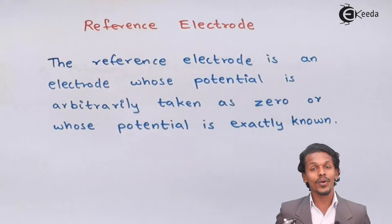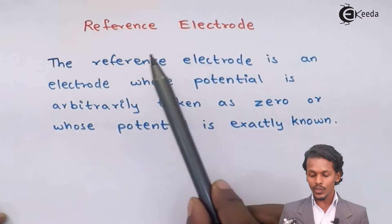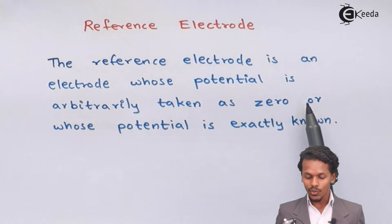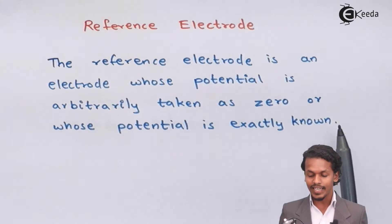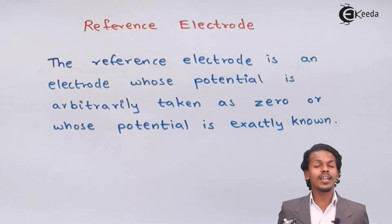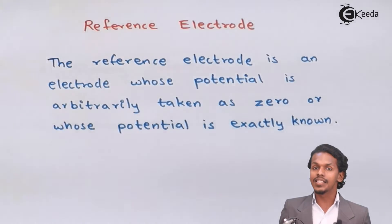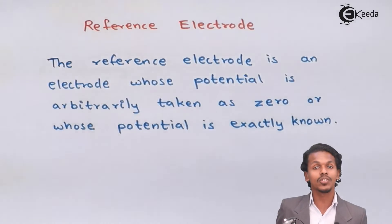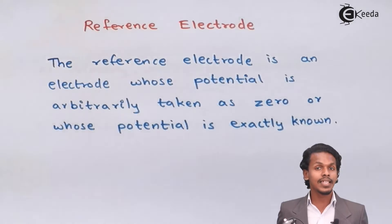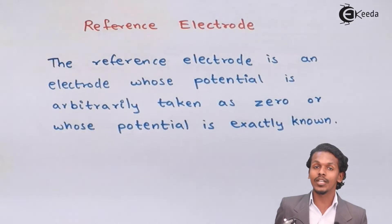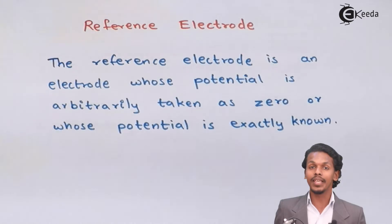Let's talk about the reference electrode. A reference electrode is an electrode whose potential is arbitrarily taken as 0, or whose potential is exactly known to us. Suppose I have two half cells — one half cell consists of an electrode whose potential is not known to us, while in the second half cell we use a reference electrode whose value is either exactly known or taken as 0.